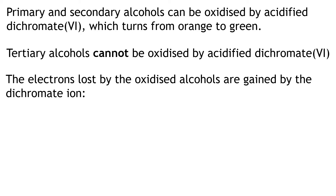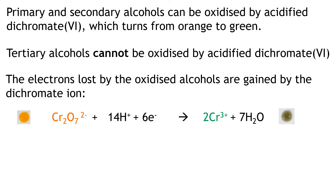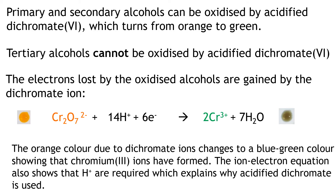What's happening is the electrons lost by the oxidised alcohols are gained by the orange dichromate ion. When the orange dichromate ion gains electrons in the presence of hydrogen ions, we get the green chromium ion, which gives the green colour at the end of the reaction. The reason the dichromate is acidified is because of the 14H⁺ required in this reaction — there needs to be a source of hydrogen ions in the reaction.